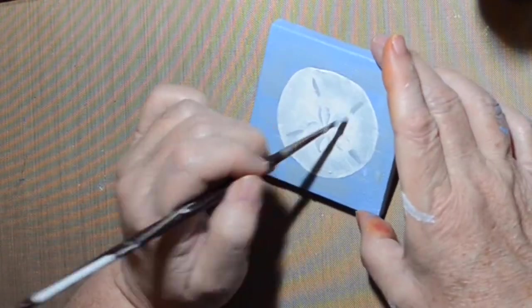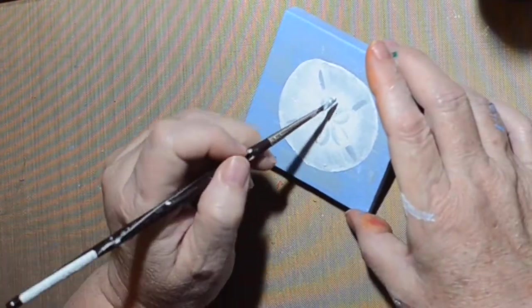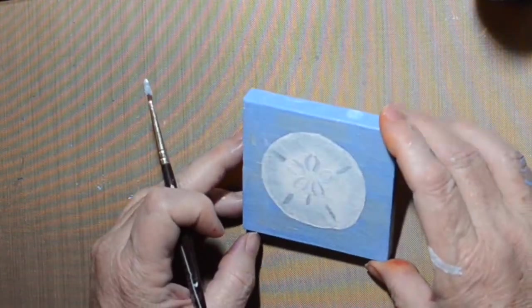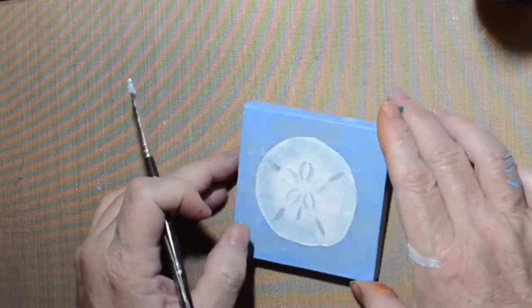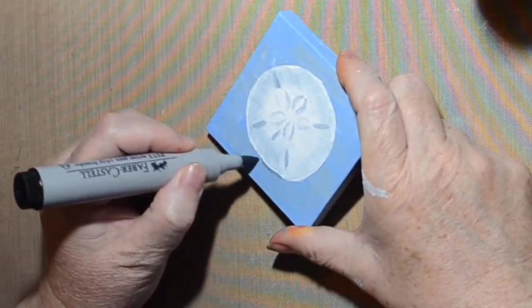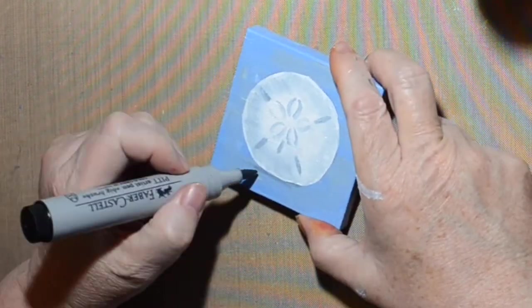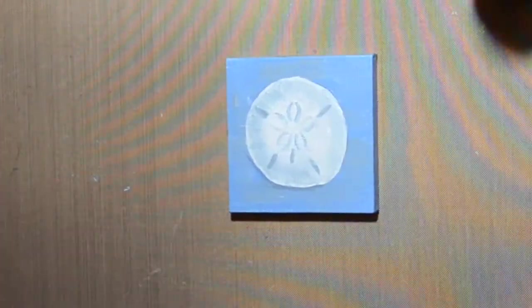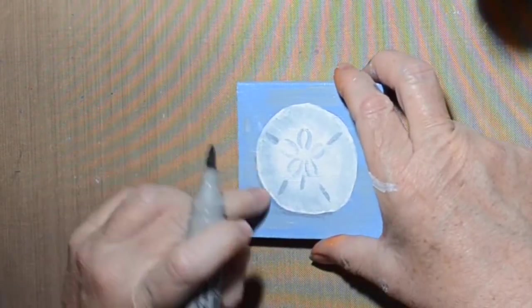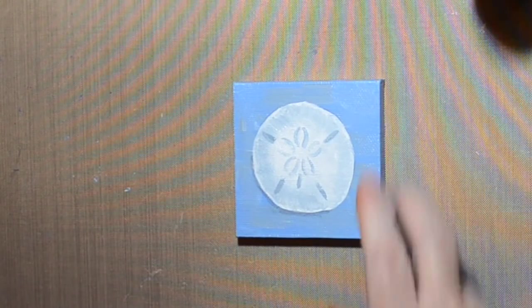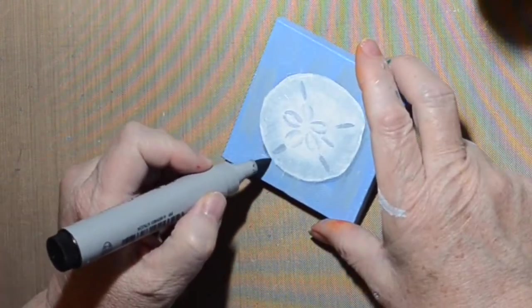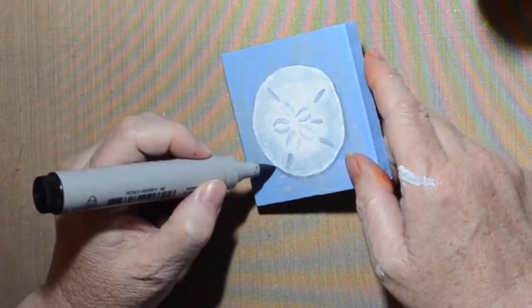This sand dollar has these little interesting flowery shapes on there and then some little holes, so that's what those little gray spots are supposed to represent. Now I'm trying to create a little bit of shading around it to make it look like it's sitting on the surface, even though I said that was supposed to look like water. I really want it to sit on the surface.